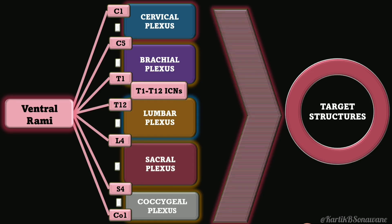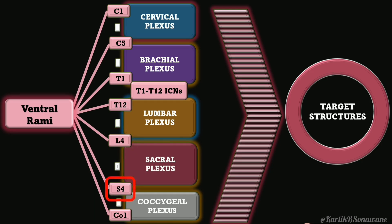C5 contributes to both cervical and brachial plexuses. T12 contributes to the lumbar plexus. L4 contributes to both lumbar and sacral plexuses, and S4 contributes to both sacral and coccygeal plexuses.